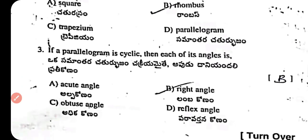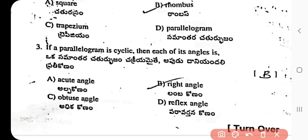Question 3: If a parallelogram is cyclic, then each of its angles is — acute, right, obtuse, or reflex? The answer is right angle. A cyclic parallelogram must have opposite angles that are both equal (parallelogram property) and supplementary (cyclic property), meaning 2x = 180 degrees, so each angle is 90 degrees.